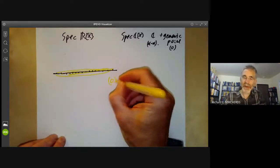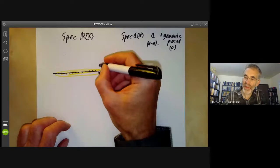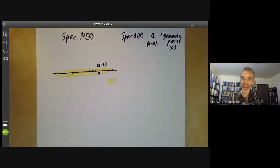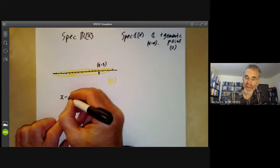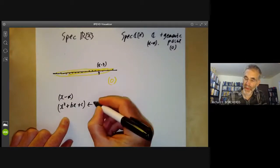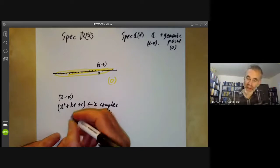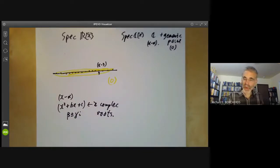The ideal zero corresponds to a generic point, and a point like three corresponds to the ideal x minus three. However, that's not all the prime ideals of R[x], because the prime ideals correspond to irreducible polynomials. There are two sorts: things of the form x minus alpha, or x² + bx + c with two complex roots beta ± γi. So we should really add extra points corresponding to pairs of complex numbers.